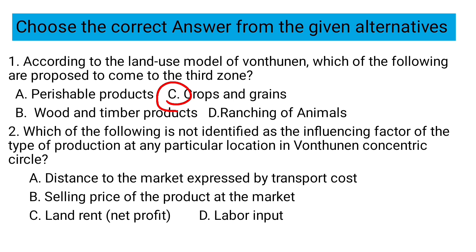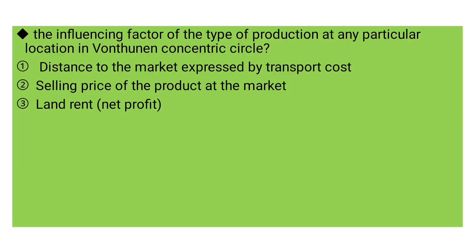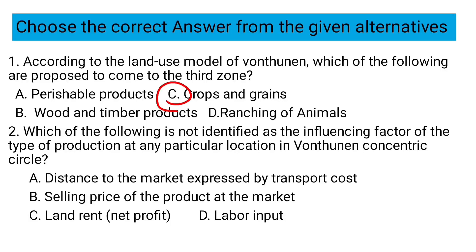Question number two: Which of the following is NOT identified as an influencing factor of the types of production at any particular location in Von Thünen's concentric circles? A) distance to the market expressed by transport cost, B) selling price of the product at the market, C) land rent or net profit, D) labor inputs. The answer is D — labor input is not an influencing factor in Von Thünen's model.